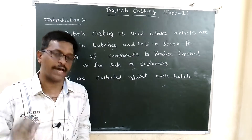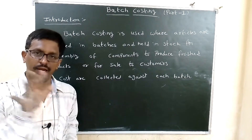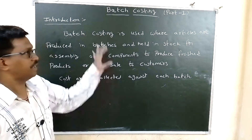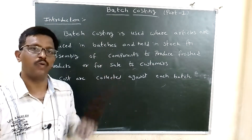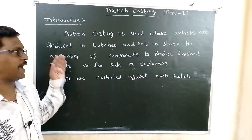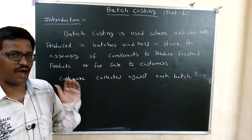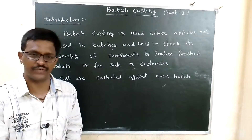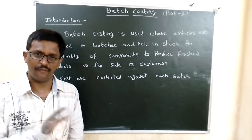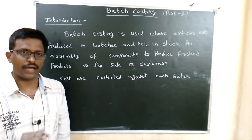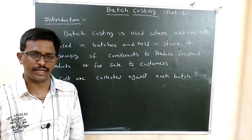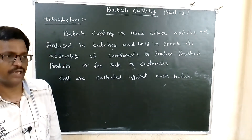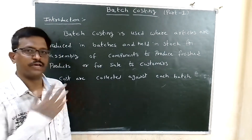Batch costing is usually where articles are produced in batches. Articles are batch-wise — batch-1, batch-2, batch-3. In one day there are 3 batches. Batches are used to meet stock and maintain demand requirements.